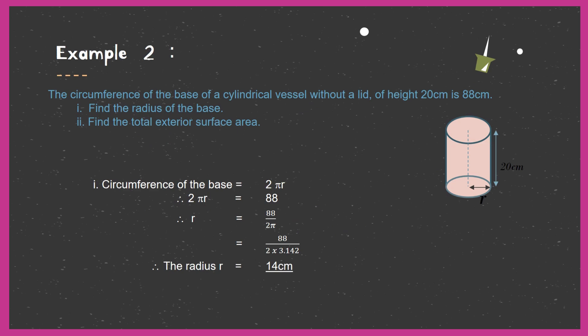Example 2: The circumference of the base of a cylinder vessel without a lid, of height 20 cm, is 88 cm. So they are giving us the circumference of the base as 88 cm, and the height as 20 cm, but they have not given the radius. One important thing here is the cylinder is without a lid, meaning it only has a circle at the base — it does not have a lid on top.